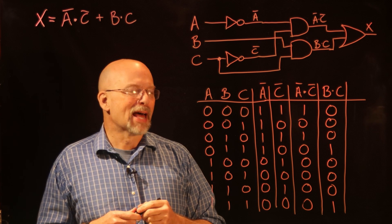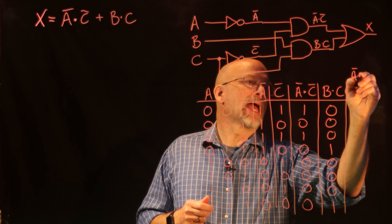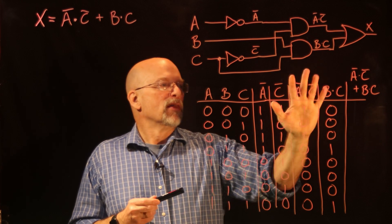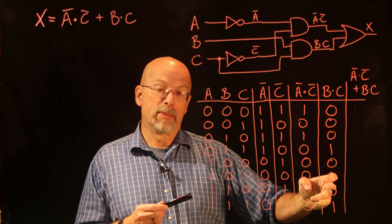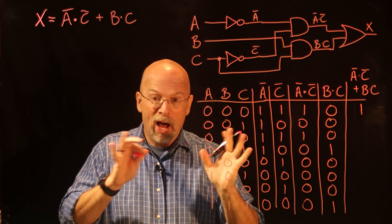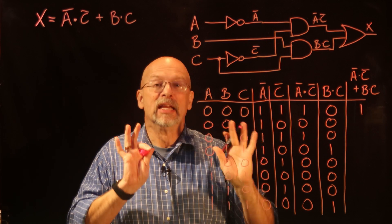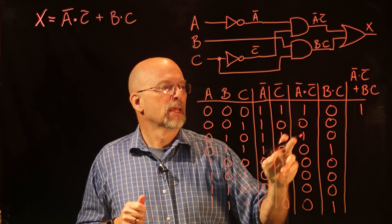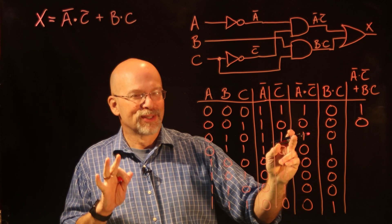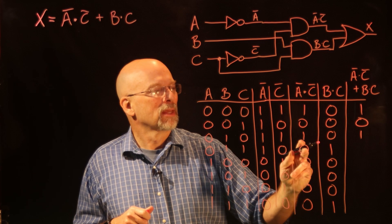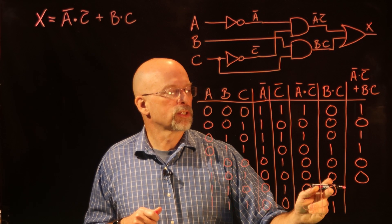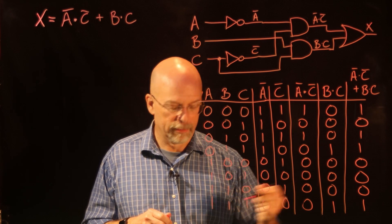For the last column, we OR Ā·C̄ with B·C. A 1 at either input of an OR gate outputs a 1. So: 1 OR 0 = 1; 0 OR 0 = 0; 1 OR 0 = 1; 0 OR 1 = 1; 0 OR 0 = 0; 0 OR 0 = 0; 0 OR 0 = 0; 0 OR 1 = 1. That gives us our X output column.